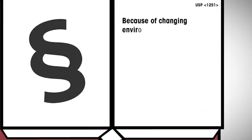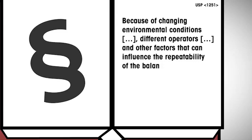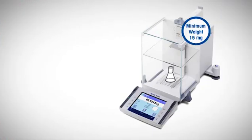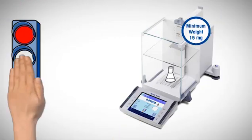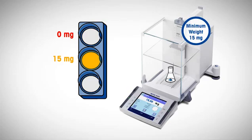Because of changing environmental conditions, different operators and other factors that can influence the repeatability of the balance while in use, when possible, weighing should be made at larger values than the minimum weight. It is therefore recommended to use a safety factor, which ensures that the smallest net weight is sufficiently larger than the minimum weight determined at a particular time by a particular person.